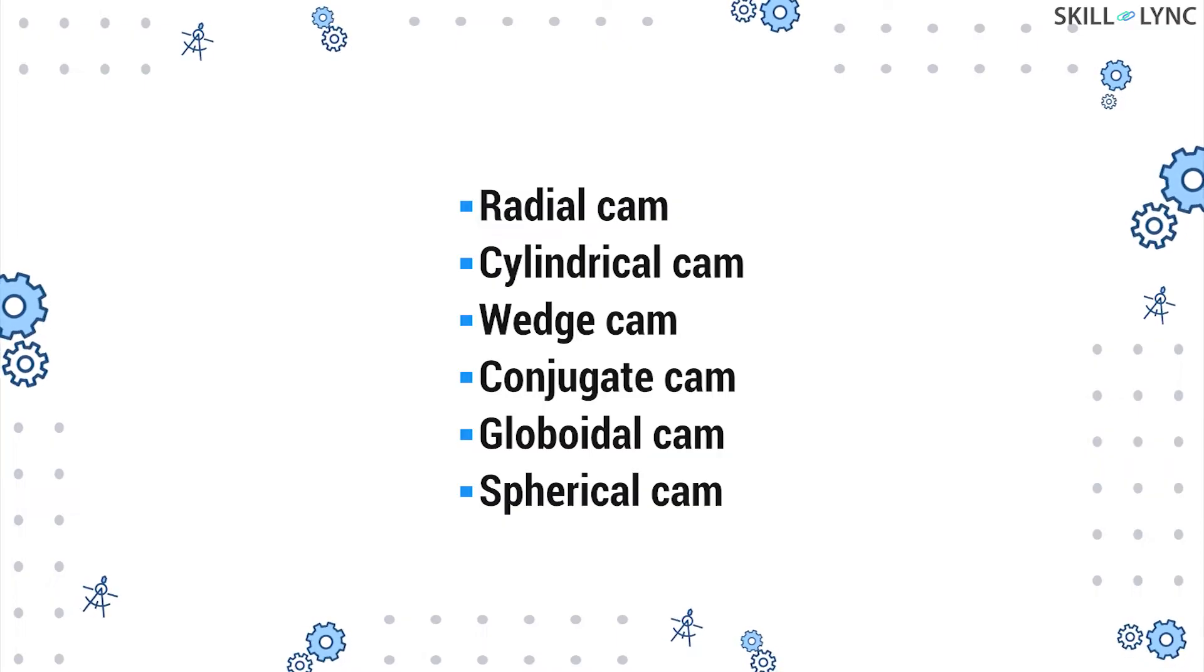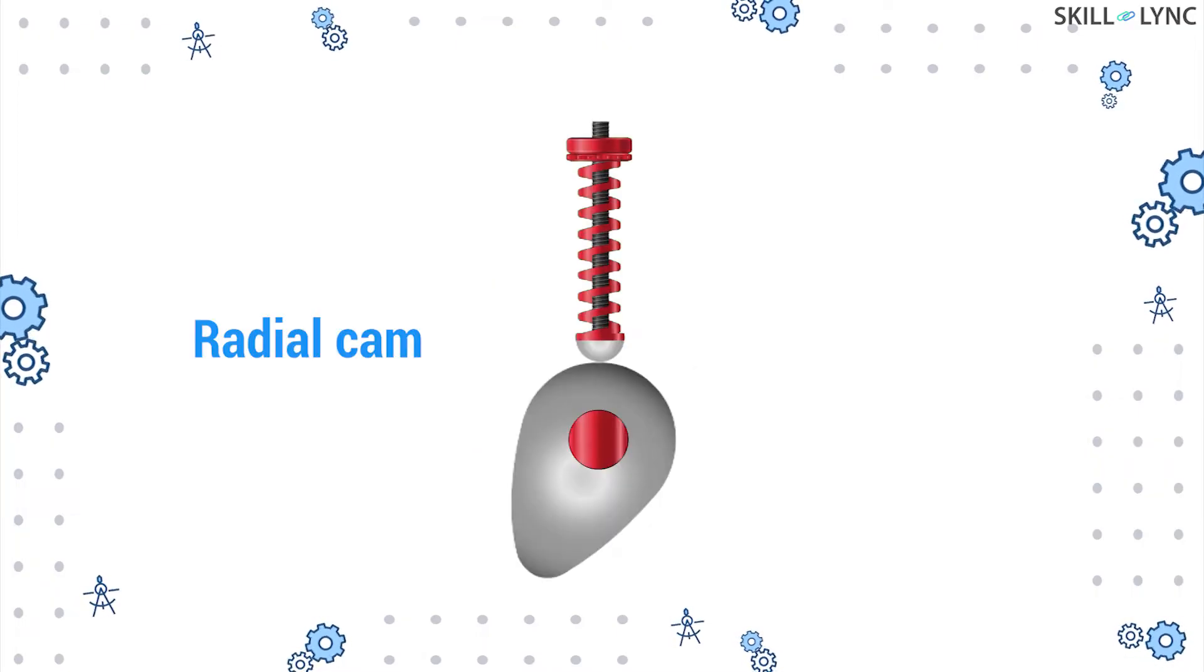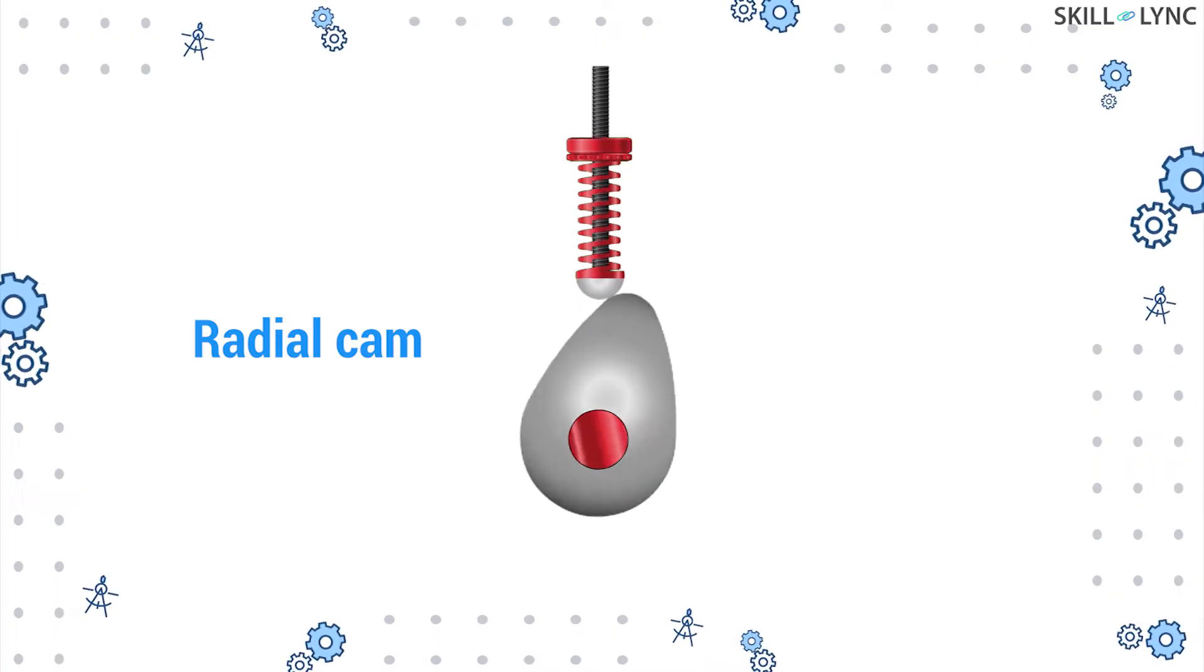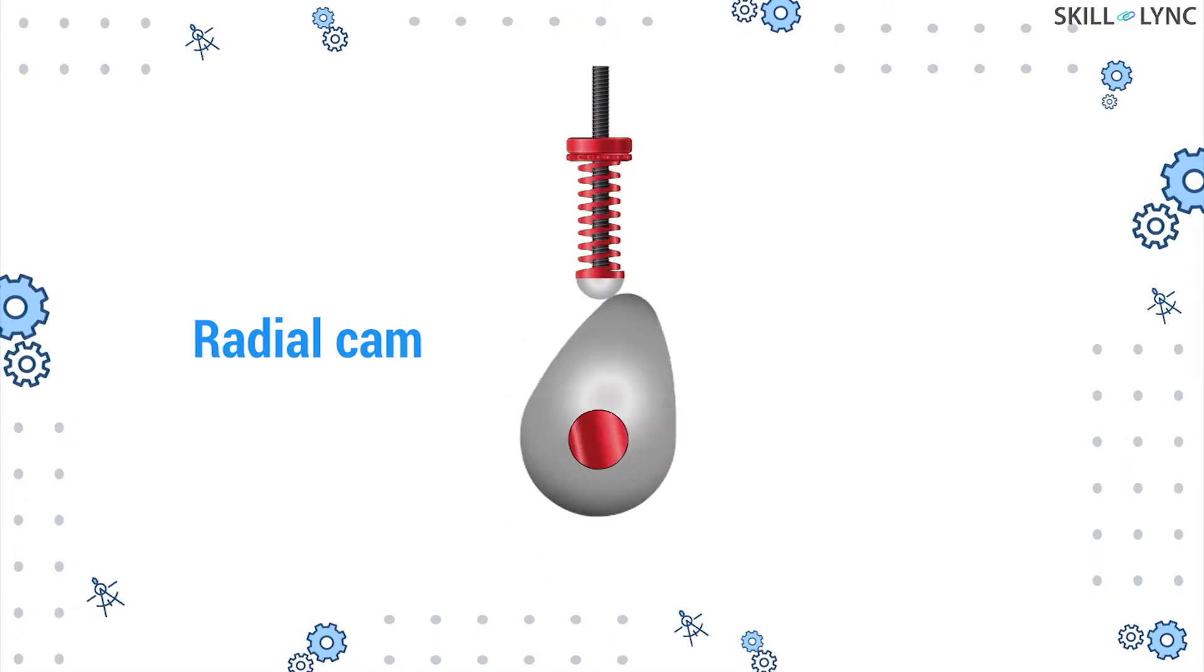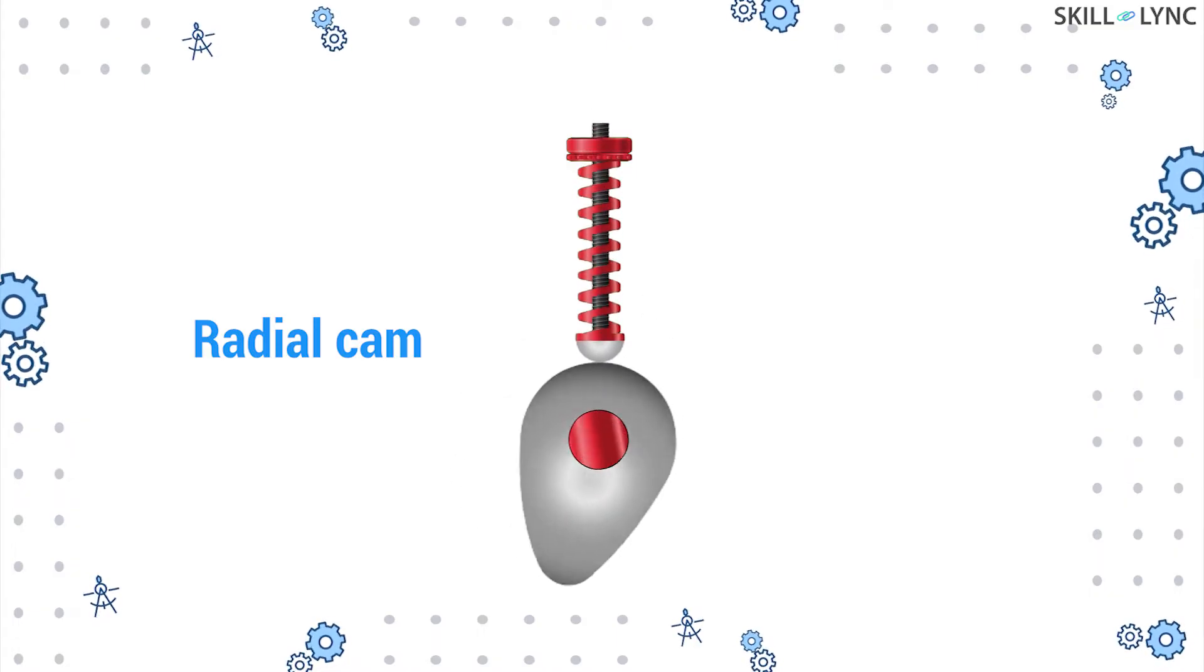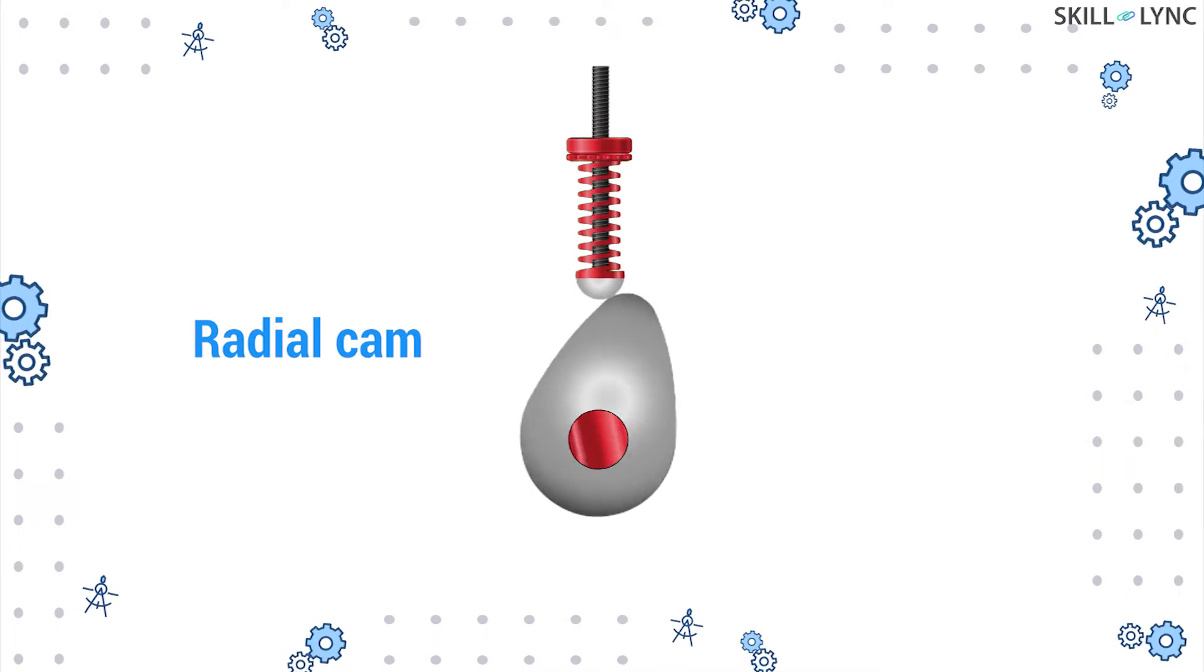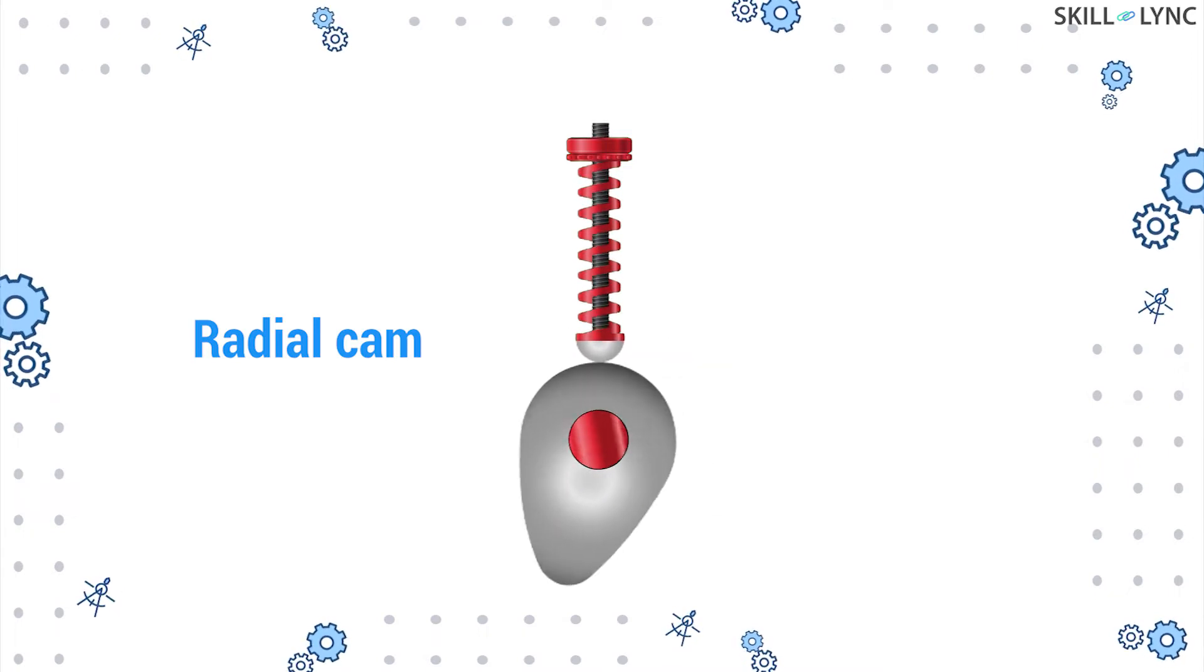Let's see the types one by one. The radial cam is simple and is made from a flat plate. The circumference of the cam is designed in such a way as to provide the desired motion. Hence, it's also known as a plate or disc cam. In this type, the axis of the cam is perpendicular to the direction of motion of the follower.